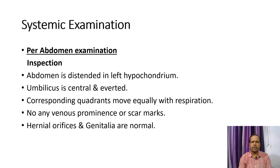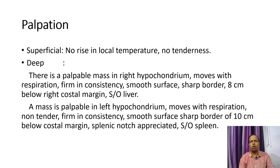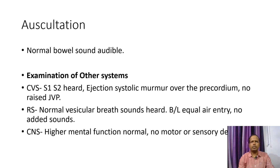Systemic examination — per abdomen: On inspection, the abdomen is distended in the left hypochondrium. Umbilicus is central and everted. Corresponding quadrants are moving equally with respiration. No venous prominence or scar marks. Hernial orifices and genitalia are normal. On superficial palpation, no rise in local temperature and no tenderness. On deep palpation, a palpable mass in the right hypochondrium moves with respiration, firm in consistency, smooth surface, sharp border, 8 cm below the right costal margin — suggestive of liver. A mass is also palpable in the left hypochondrium, moves with respiration, non-tender, firm in consistency, smooth surface, sharp border, 10 cm below the costal margin; a splenic notch was appreciated — suggestive of spleen. On auscultation, normal bowel sounds audible.